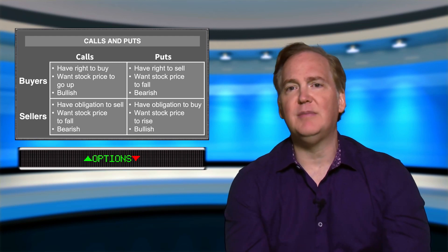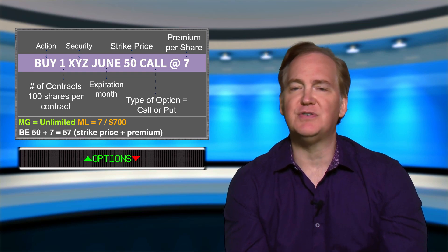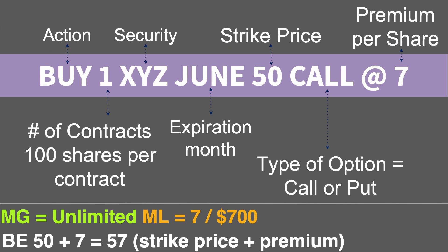Now let's take a look at a potential option trade example. Someone bought one XYZ June 50 call at seven. The buyer of this call contract has the right to buy 100 shares of XYZ at $50 until June. For this right they paid a premium of $7 per share, a total premium of $700. Every option contract covers 100 shares of stock.